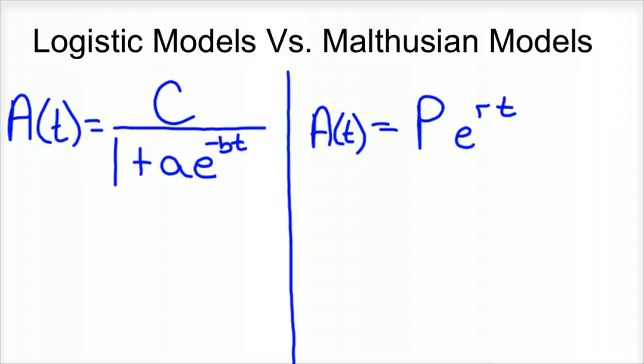So a logistics model versus a Malthusian model. What we've been doing with exponential growth to this day, with continuous growth, is using a Malthusian model, which in our case is this A(t), the function A(t) equals Pe^(rt). I've always called it PERT, where P stands for your initial amount.